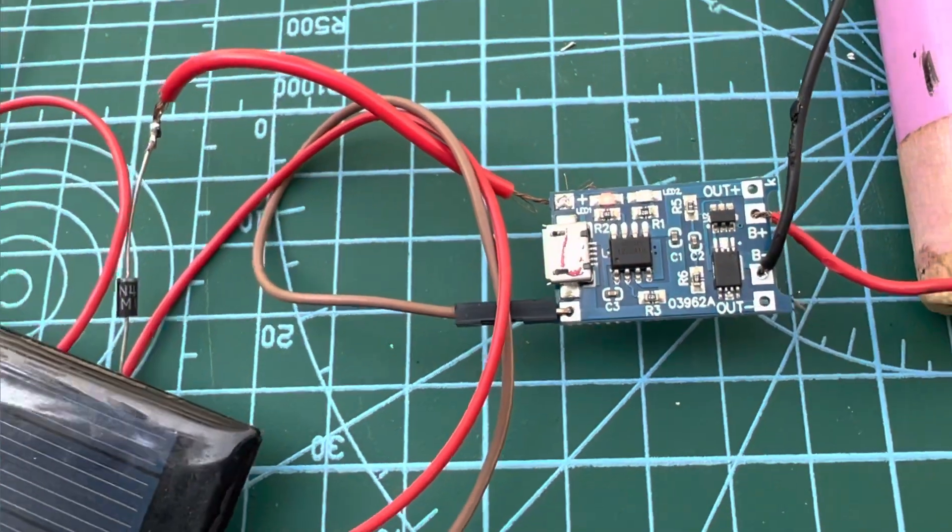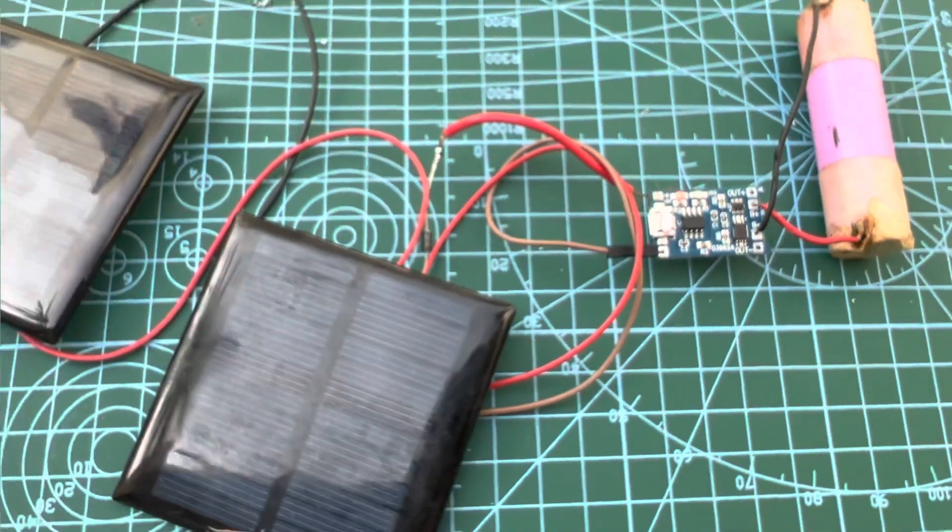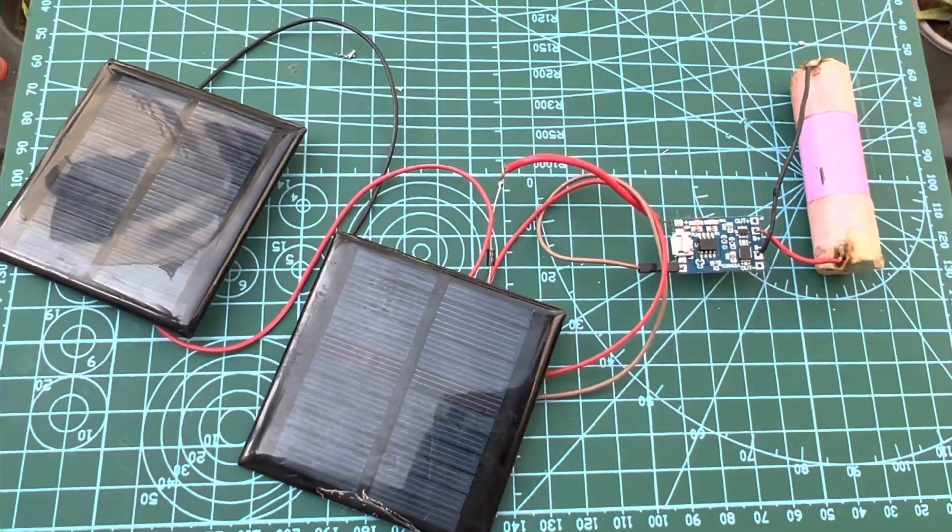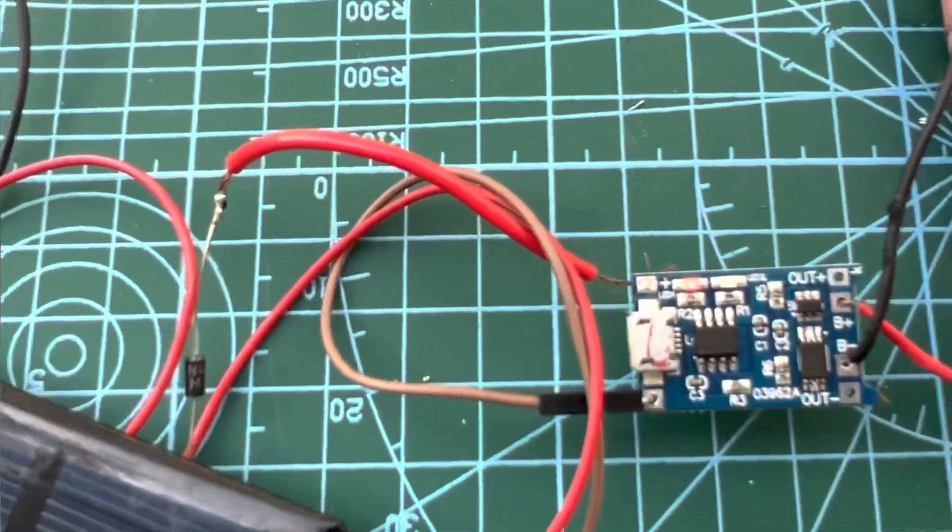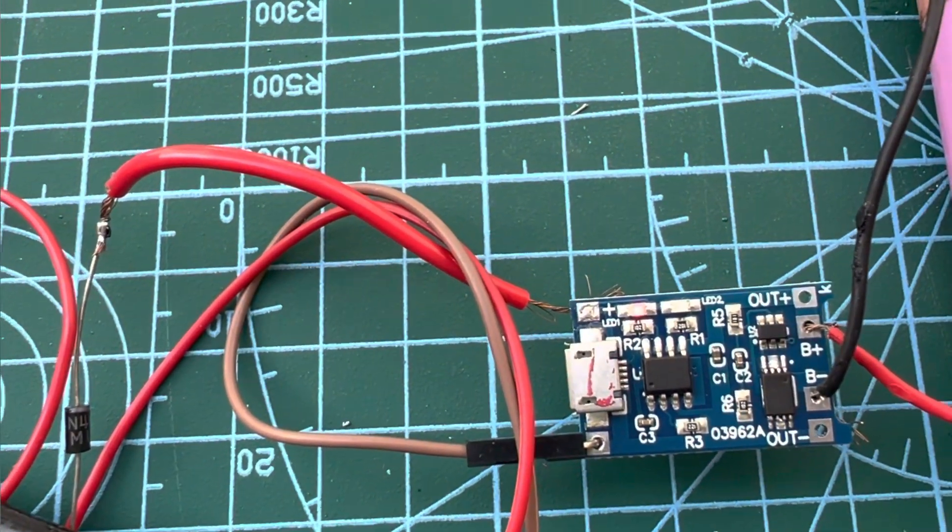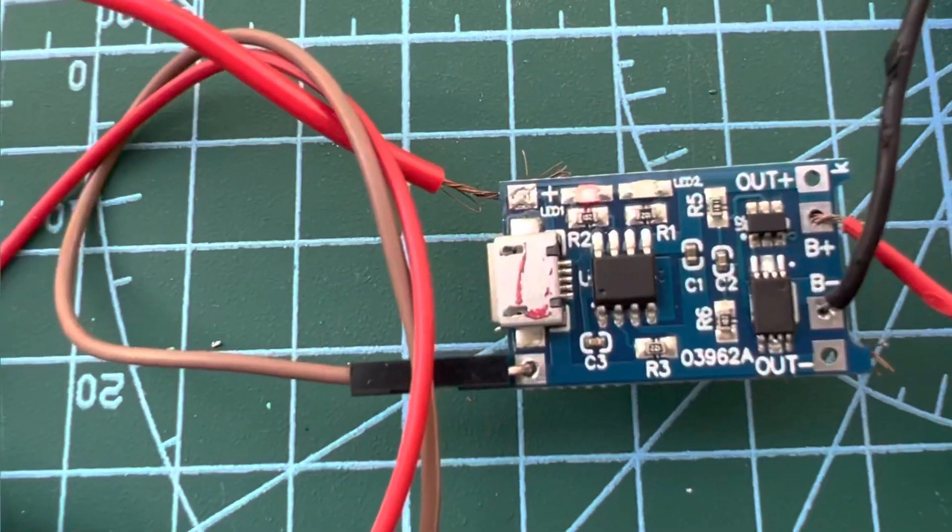Do you see the red light glowing on the module? Yes, it means the lipo battery is in charging state. Once it's completely charged, the adjacent light will turn blue. Now let's see how we can make this simple circuit. Let's get started.